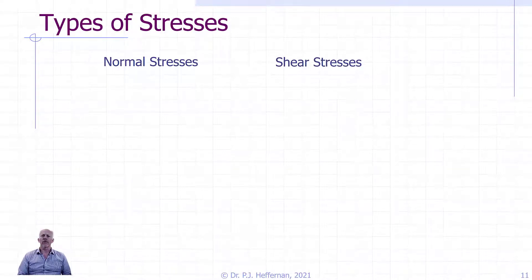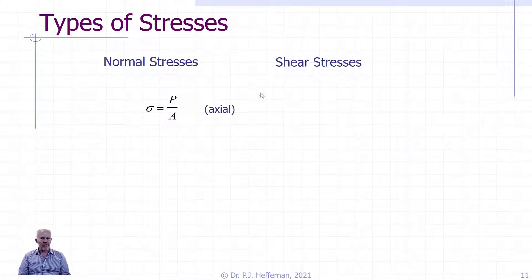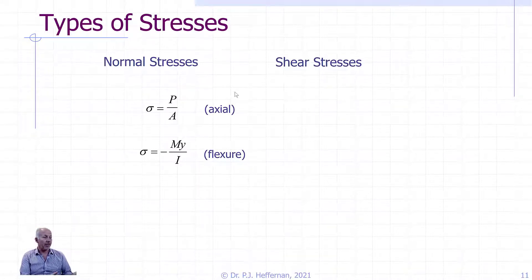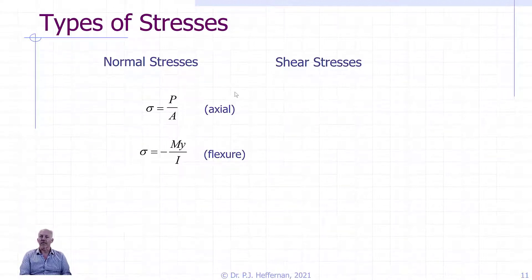So what are the loading mechanisms that we have, just as a summary? For normal stresses, we have axial, or normal stresses due to axial load, represented by the formula sigma equals P over A. That gives us a normal stress perpendicular to the cross-section at the point we're considering. We also have normal stresses resulting from bending, and we use the flexure formula, negative MY over I, to figure out what the normal stresses are — again, perpendicular to the cross-section resulting from bending.